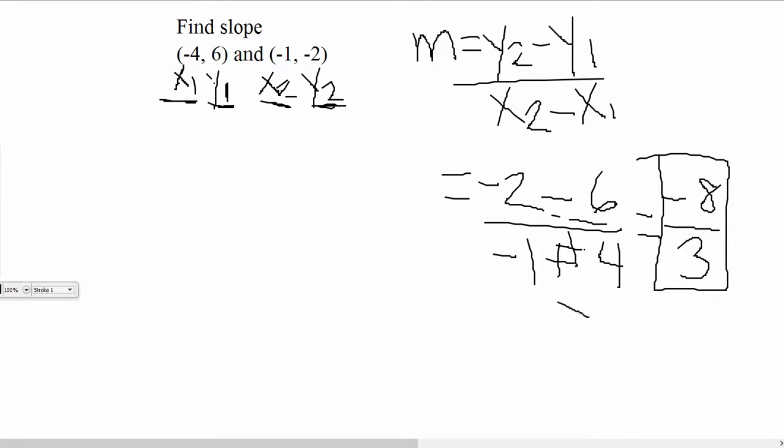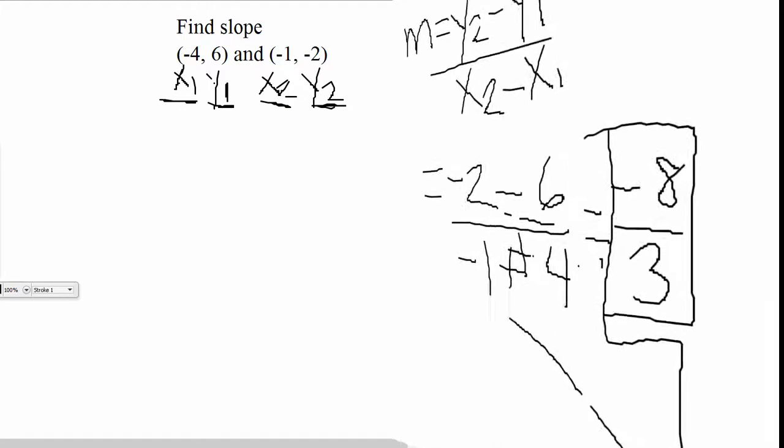So that means our line would be generally going in the negative direction and it would be rising 8, running 3. So it would be going up 8 over 3, up 8 over 3.